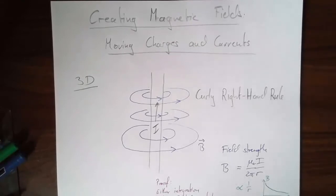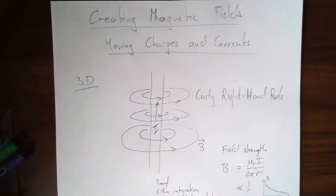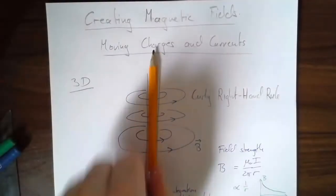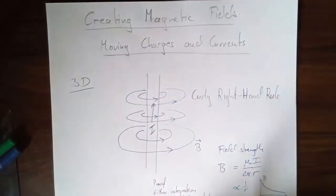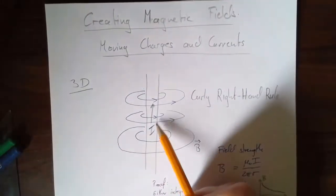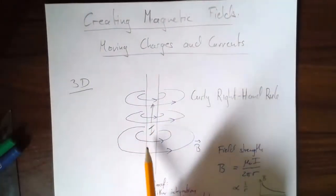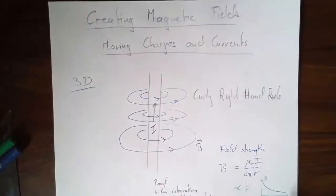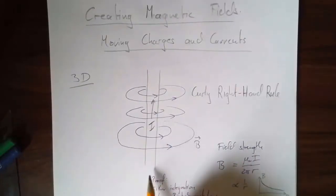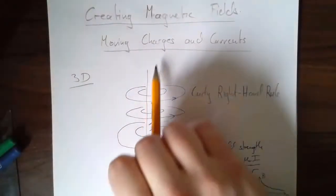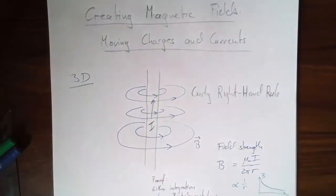Let me start with a simple case. Let's say I've got a very simple wire and the wire goes straight up like this. So the current I is going upwards — maybe it's a battery somewhere. There's an electric current going upwards in the wire.